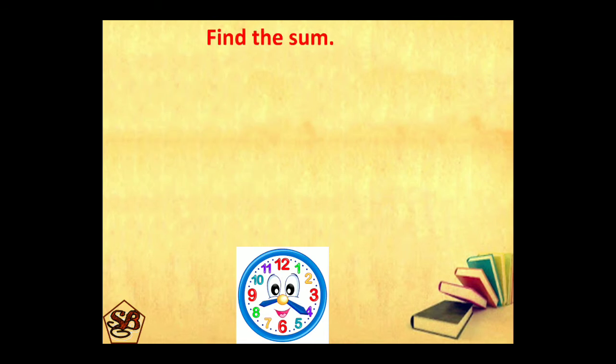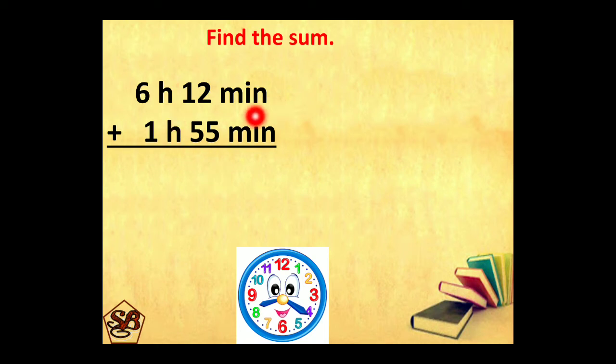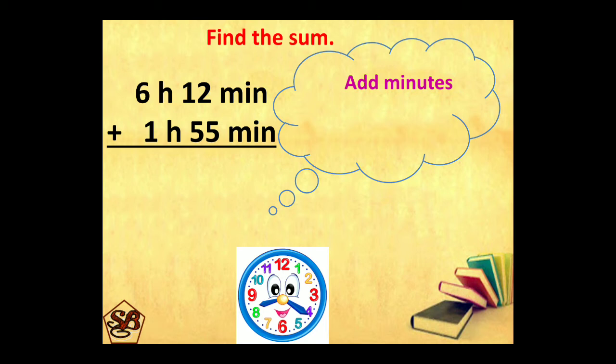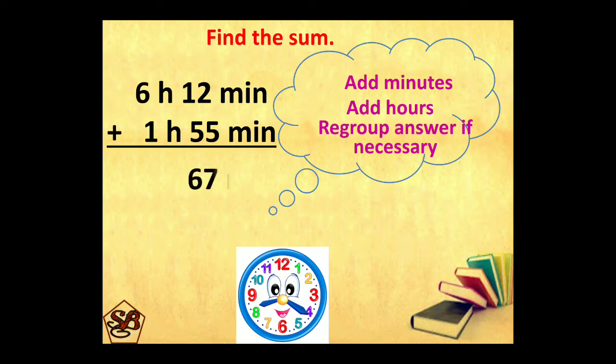Let's take another example. 6 hours 12 minutes plus 1 hour 55 minutes. We need to consider these steps. Add the minutes, add the hours, and then regroup if necessary. So let's add the minutes. 2 plus 5 is 7, 1 plus 5 is 6, giving us 67 minutes.